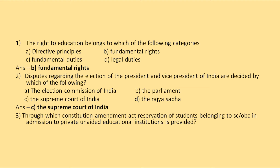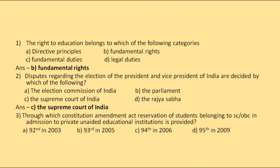Through which Constitution amendment act was reservation of students belonging to SC and OBC in admission to private unaided educational institutions provided? The options are 92nd in 2003, 93rd in 2005, 94th in 2006, or 95th in 2009. The correct answer is the 93rd amendment in 2005.